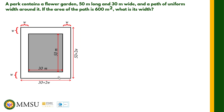The shaded portion is the flower garden — 50 meters length by 30 meters wide. Around it is the path of uniform width. That's what is unknown in this problem: the width of the path. We denote that as w. As you can see on the illustration, the width of the path is w. Therefore, the total length is 50 plus 2w, because we have w from the top portion and w from the bottom portion, giving a total length of 50 plus 2w.